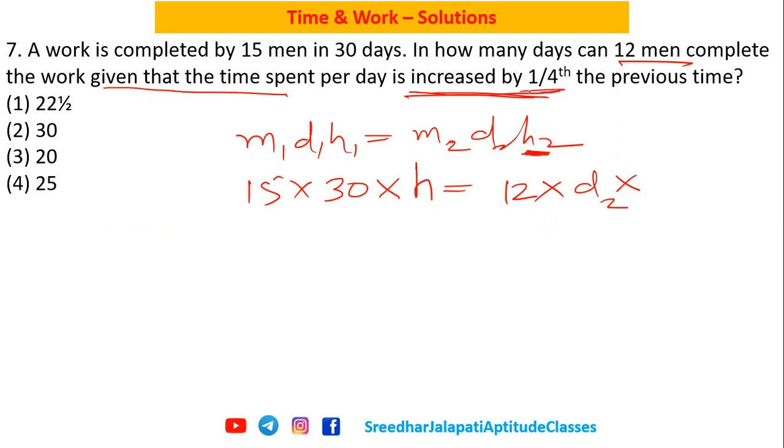given that it is one fourth more than the previous. What is the previous time? We assumed h. Now it is one fourth more than that, so h plus h by 4, that is 5h by 4 number of hours in the second case.